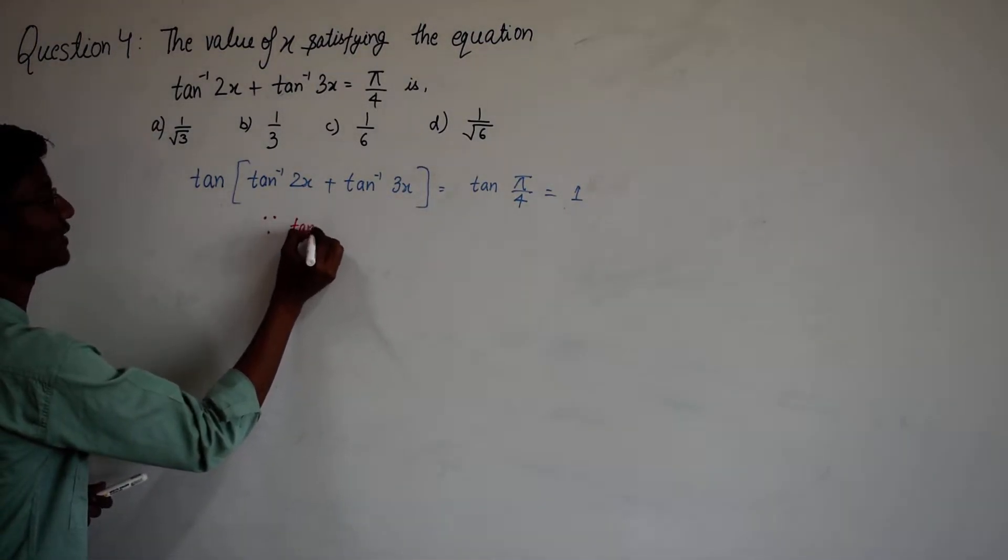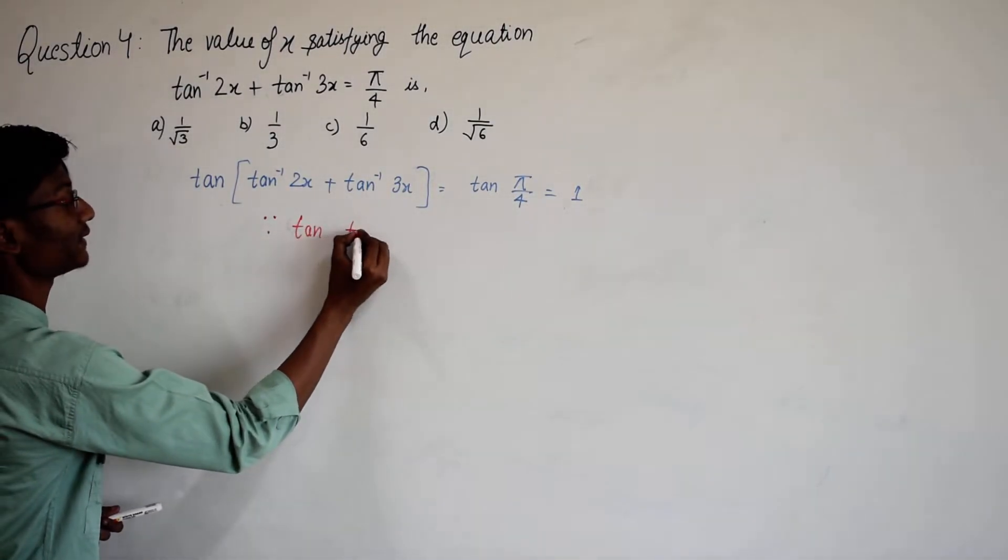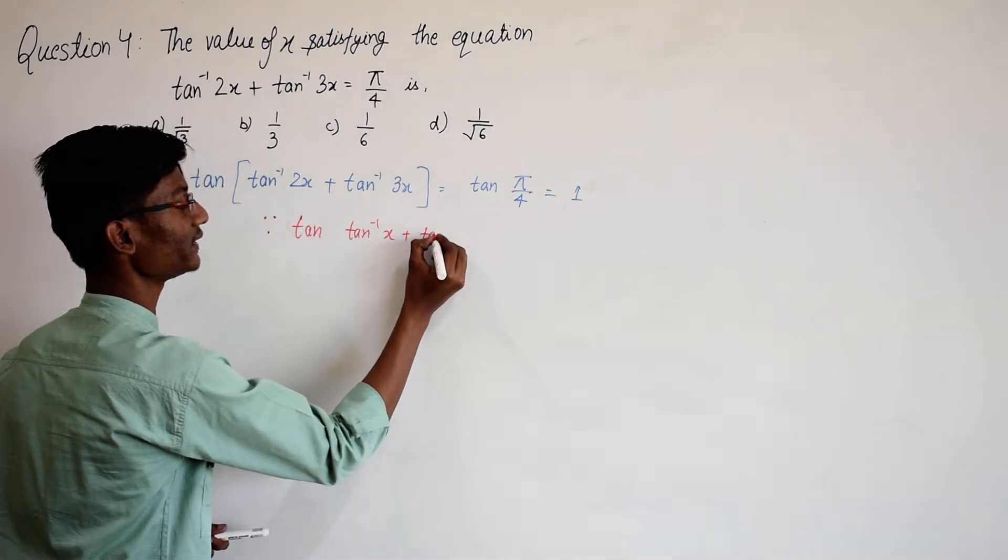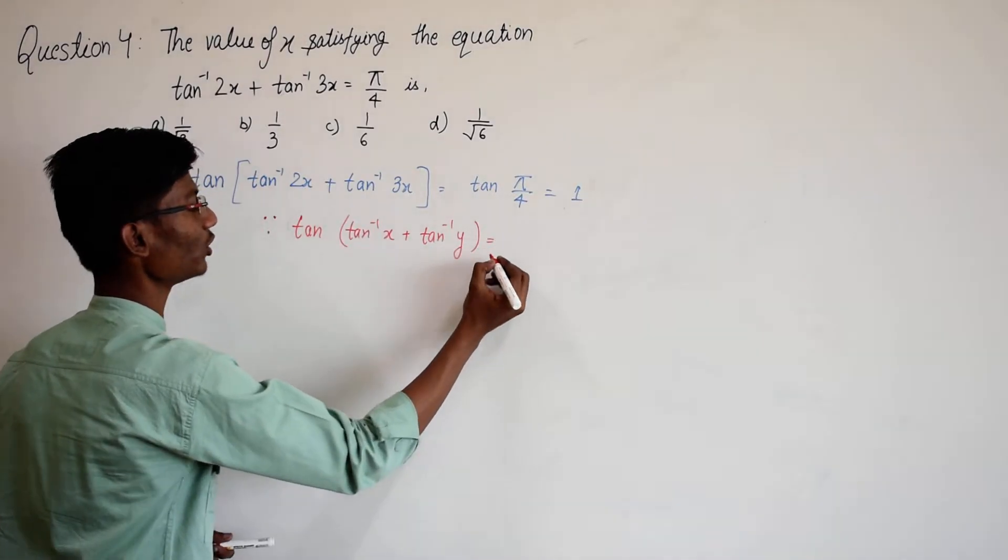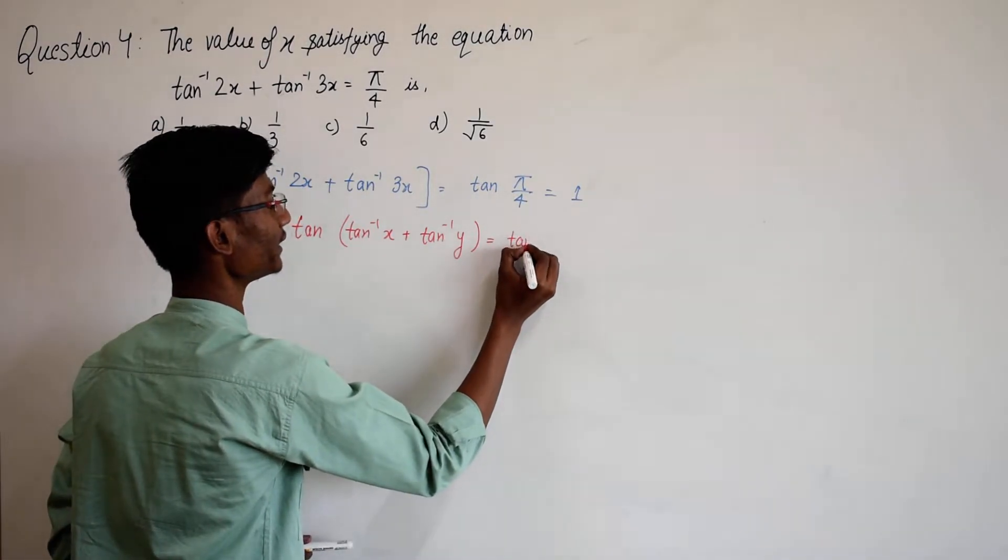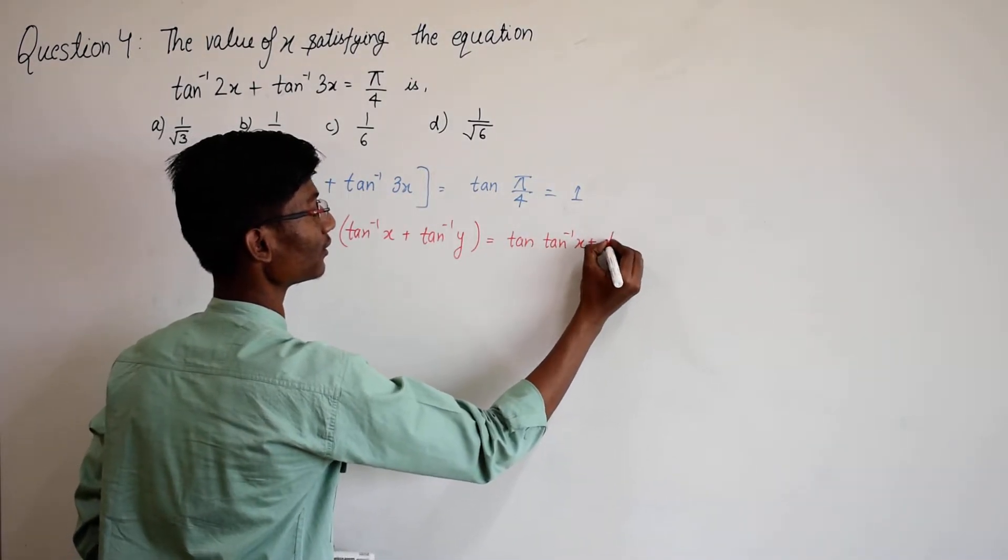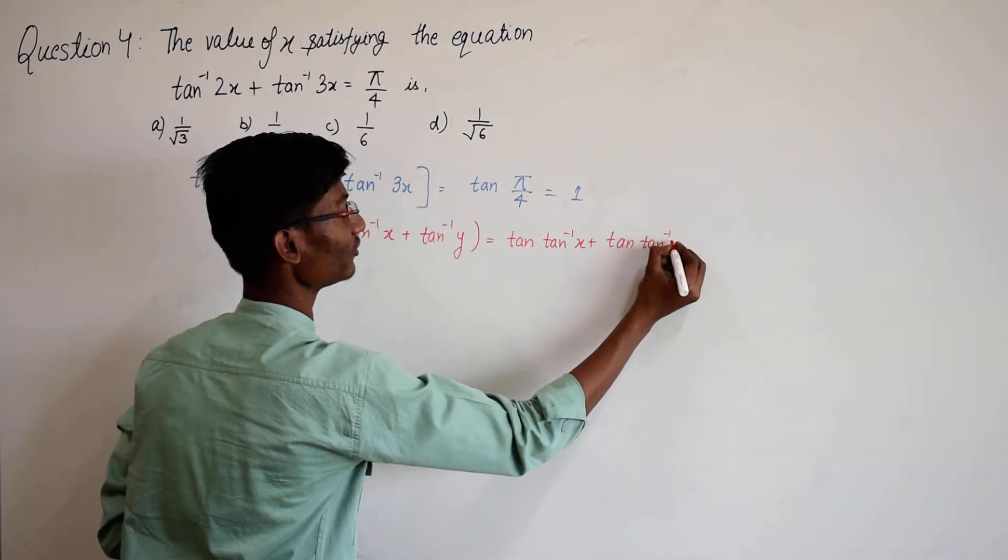The identity is tan of tan inverse x plus tan inverse y is equal to tan of tan inverse x plus tan of tan inverse y.